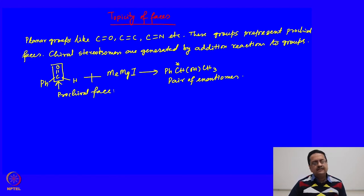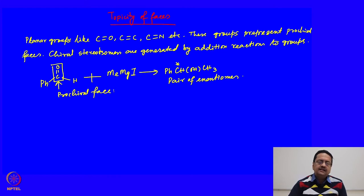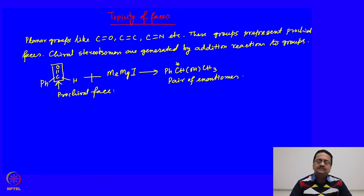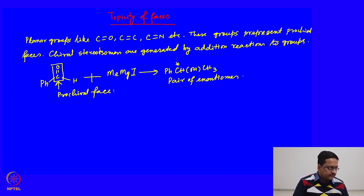If the reaction takes place from the top of this group or from the bottom of the group, it generates two different stereoisomers. Just like the different groups which can be homotopic, enantiotopic, and diastereotopic, here also faces can be identified as homotopic, enantiotopic, and diastereotopic.